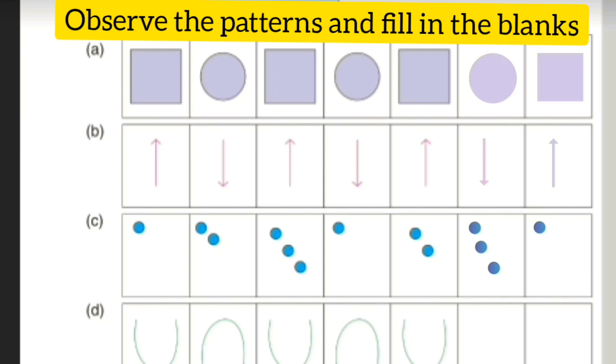Sum number D. The direction of U is upwards, downwards, upwards, downwards, upwards. What will become? Downwards. In the next box, upwards.